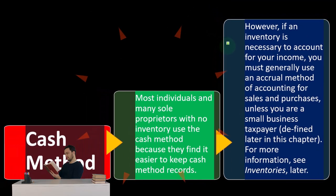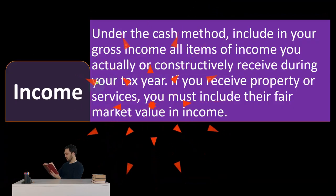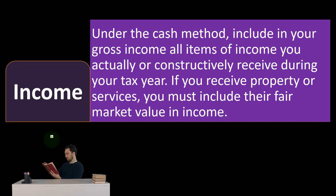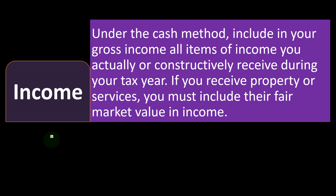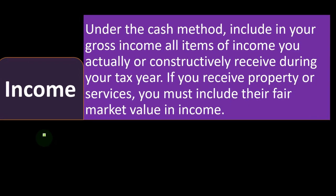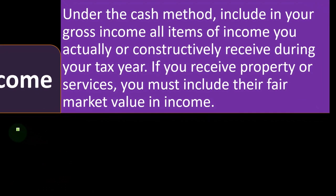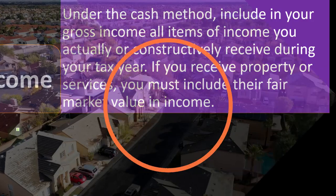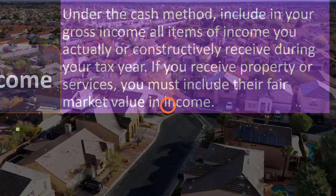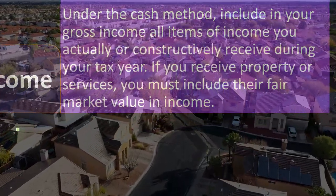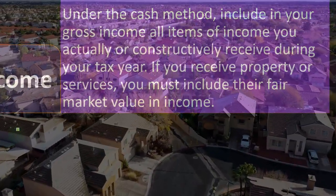If an inventory is necessary to account for your income, you must generally use an accrual method of accounting for sales and purchases, unless you are a small business taxpayer as defined later in this chapter. So if you have inventory and want to stay in a cash-based system, you have to be careful, because inventory is the classic area where the IRS will say you need to track the inventory — which is inherently accrual. Under the cash method, include in your gross income all items of income you actually and constructively receive during your tax year.